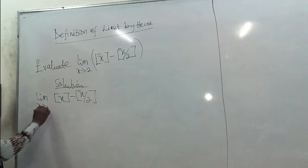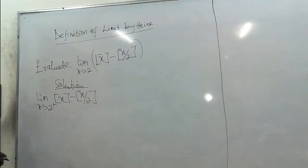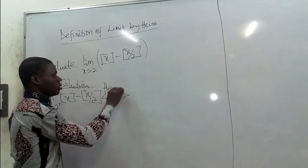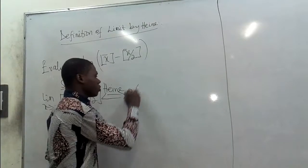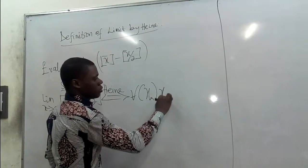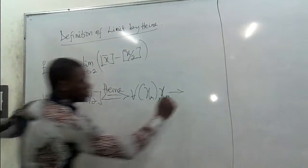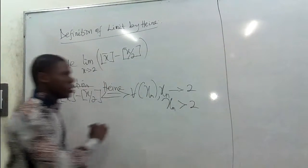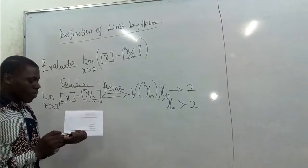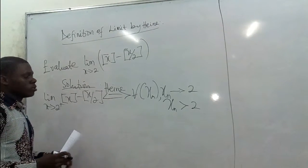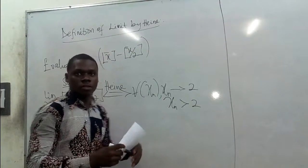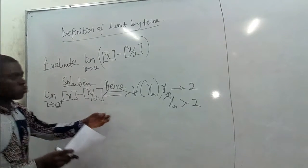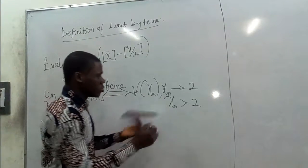So as x approaches 2 from the right, we are picking it from the right. As x approaches 2 from the right, we are going to say that for all xn, xn is approaching 2 from the right, meaning xn is between 2 and 3.